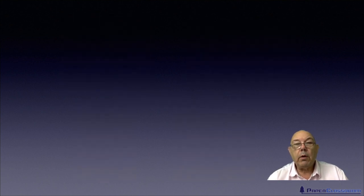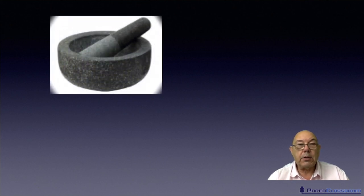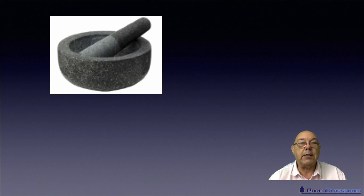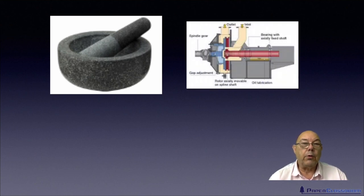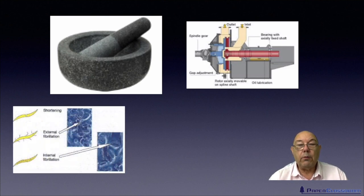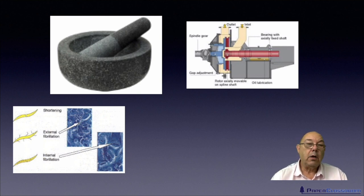When we talk about working with fibers, then we'll sort of do a bit of the history. We'll talk about the Chinese and the mortar and pestle, and then we'll go through the developments: the stamp mill, the Hollander, refiners, conical refiners, disc refiners. We'll look at the mechanism of work on a fiber.